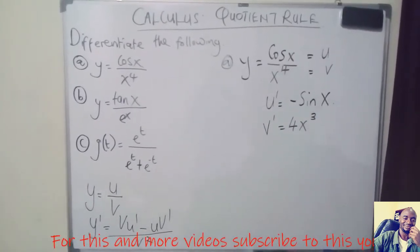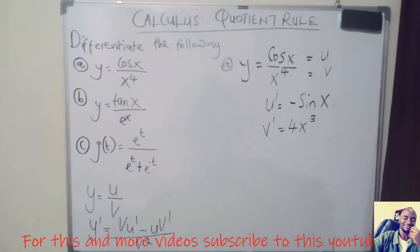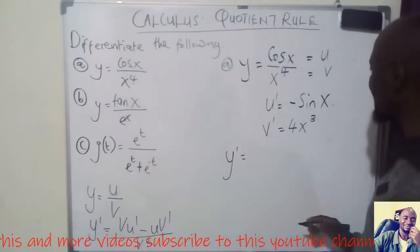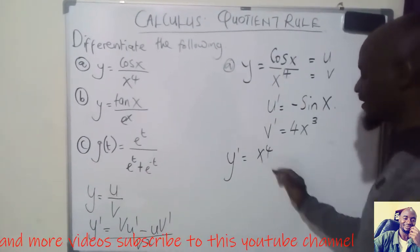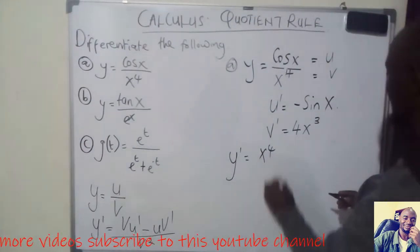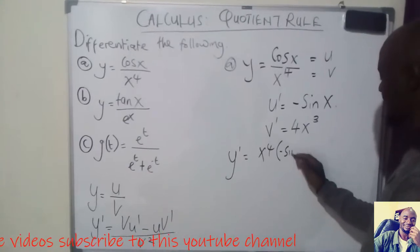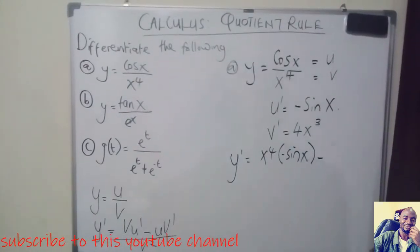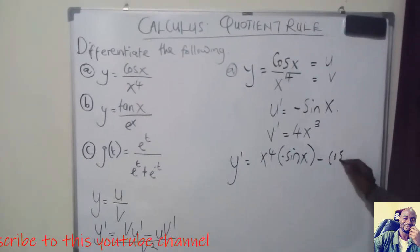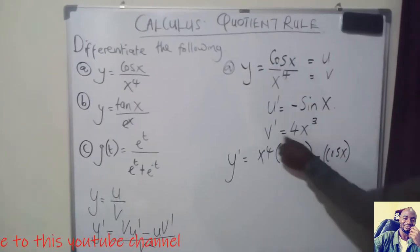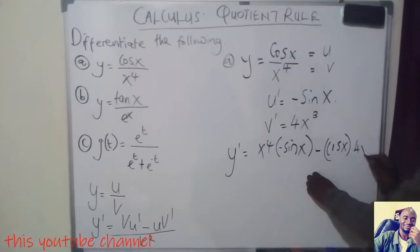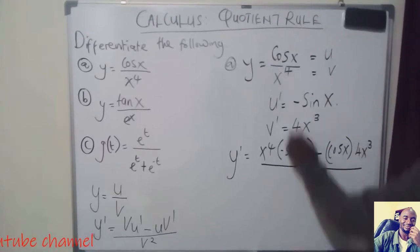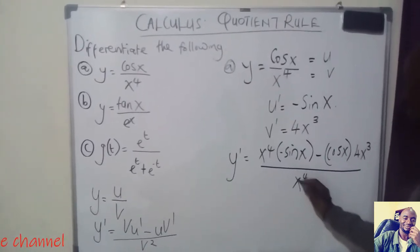Now we have to substitute into the quotient rule formula. So Y prime will be equal to: our V is X to the power 4, then U prime is minus sine X, then minus — as in the formula — our U is cos X, multiplying with V prime which is 4X to the power 3. Then this whole thing is divided by V squared, which is X to the power 4 squared.